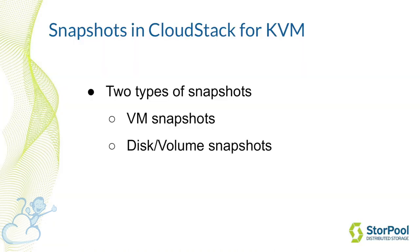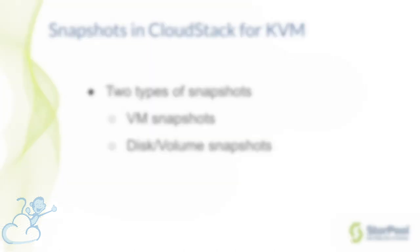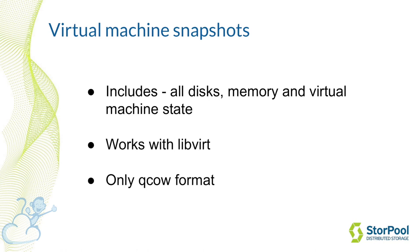CloudStack and KVM as a hypervisor support two types of snapshots: virtual machine snapshots and disk snapshots, also known as volume snapshots. Virtual machine snapshots are snapshots of the whole virtual machine — its state, memory, and all disks attached. However, this works only when all disks attached to the virtual machine are in QCOW2 format.